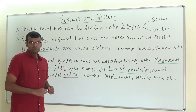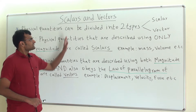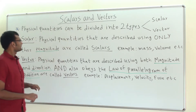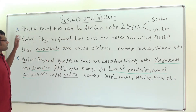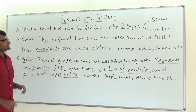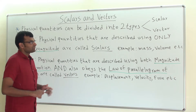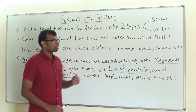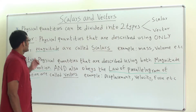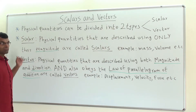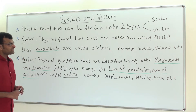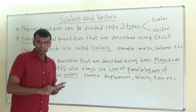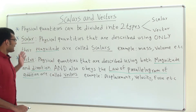In today's class we will be discussing scalars and vectors. Physical quantities can be divided into two types: scalar and vector. As per the definition of scalar, physical quantities that are described using only magnitude are called scalars.